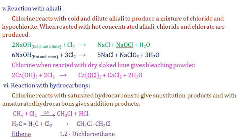Reaction with hydrocarbons: chlorine gas reacts with methane in the presence of ultraviolet light to form methyl chloride and hydrochloric acid. Chlorine also reacts with unsaturated compounds like ethene via an addition reaction to produce 1,2-dichloroethane.